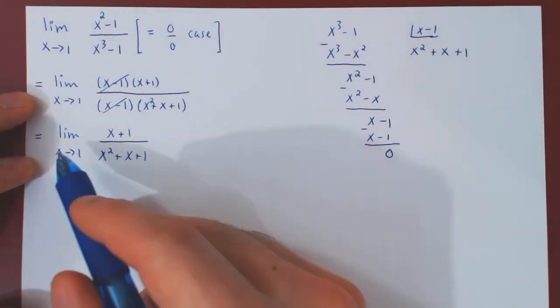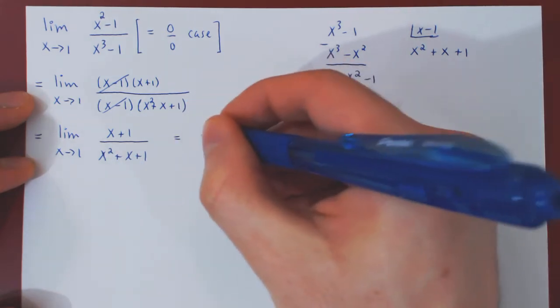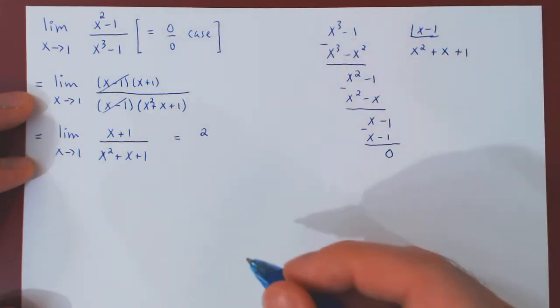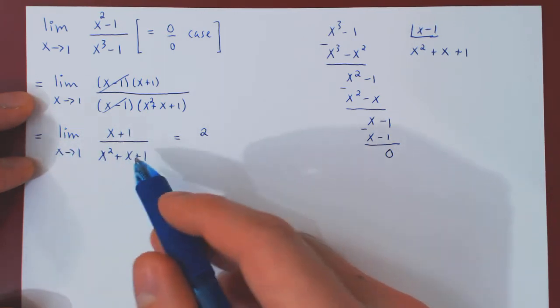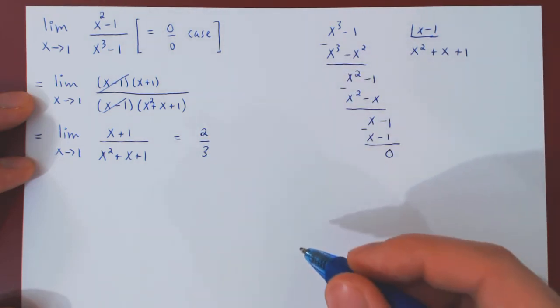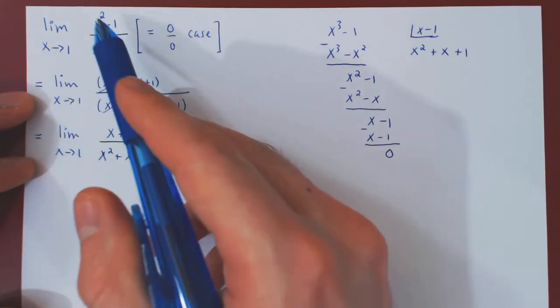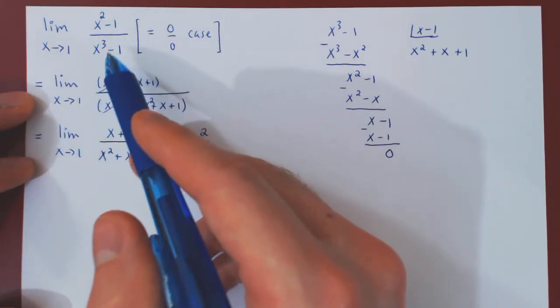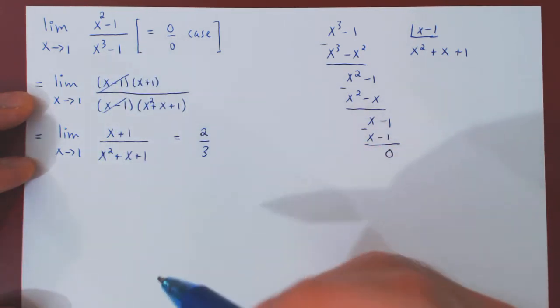And the limit now is trivial. As x approaches 1, x plus 1 approaches 1 plus 1, which is 2. And as x approaches 1, x squared plus x plus 1 approaches 1 plus 1 plus 1, which is 3. So now we have the answer. The limit is equal to 2 over 3.